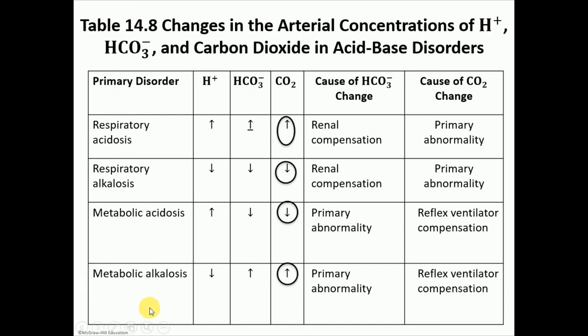In metabolic alkalosis — for example, from prolonged vomiting — the patient loses lots of hydrochloric acid, leaving relatively higher bicarbonate levels. That is the primary abnormality. As a reflex, these patients hypoventilate to retain CO₂ and compensate for the loss of acid.